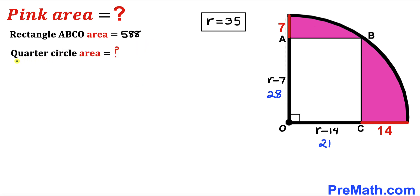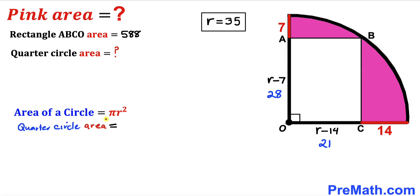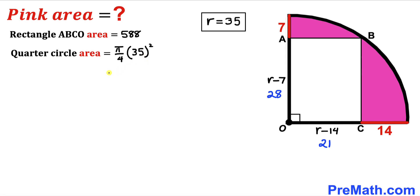Next we are going to calculate the area of this quarter circle. Recalling the area of a circle formula: Area = πr². The quarter circle area is therefore πr²/4. With r = 35, this becomes π × 35² / 4 = π × 1225 / 4 = 306.25π square units.